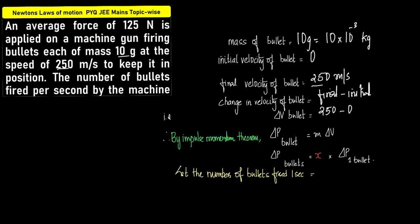Mass of one bullet is equal to 10 into 10 to the power minus 3 kilogram. The initial velocity of one bullet is zero. The final velocity of one bullet is 250 meter per second. Therefore, delta V of one bullet is 250 meter per second. And by the impulse momentum theorem, delta P of one bullet is equal to M into delta V of one bullet. Straightforward — unitary method.